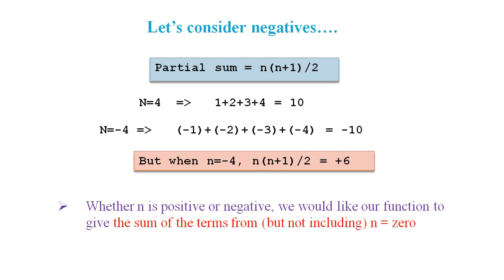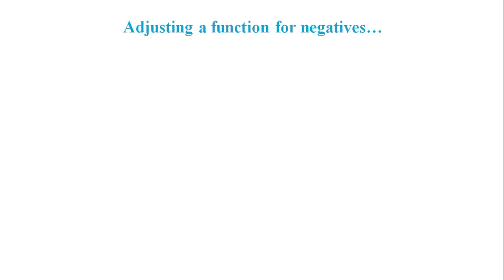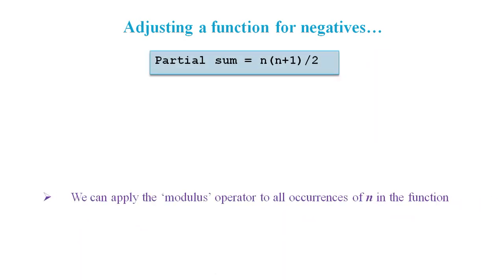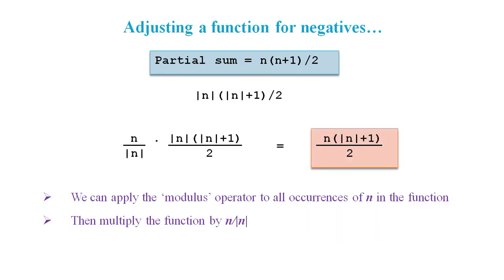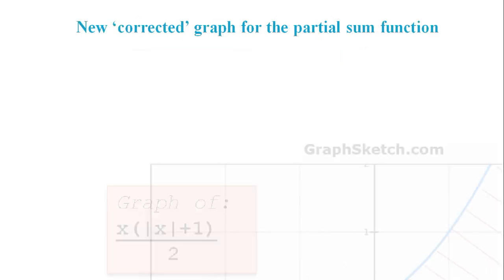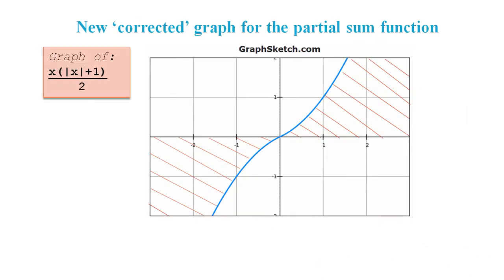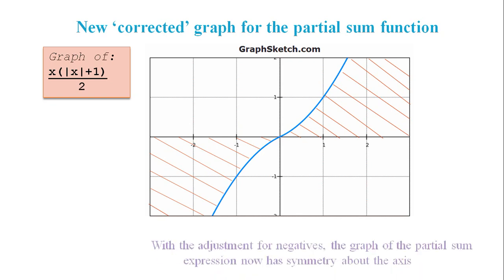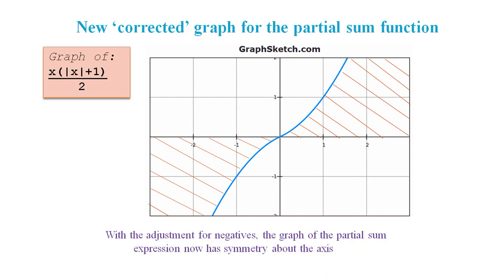To adjust our function for negative values, we first apply the modulus operator like so, then we multiply by n over the modulus of n, and we get the function that works in the same way for both negative and positive numbers. If we plot decimal values for this corrected function, we now see symmetry about the axes, and removing the diverging parts will no longer leave anything resembling -1/12.